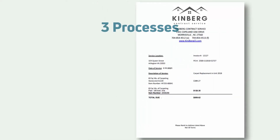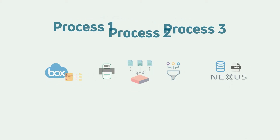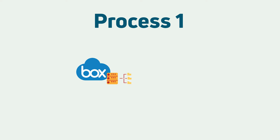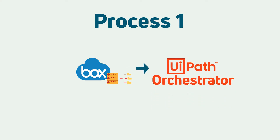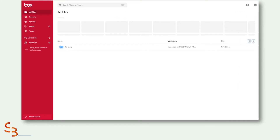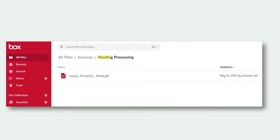This automation involves three processes. In the first one, the bot downloads files from Box.com and queues them up for processing in UiPath Orchestrator. As you watch the bot, note that there is no need for a human at this point. As you can see now, we already executed the first process and we already have the new queue items for processing.